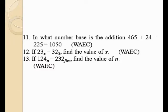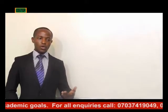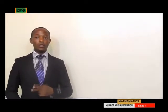If 124 base n is equal to 232 base 5, find the value of n. This question is similar to example number 12. We are going to solve it in a very similar way, except this one will produce a quadratic-type equation. We are going to find the factors of our answer and then we are going to have two answers.